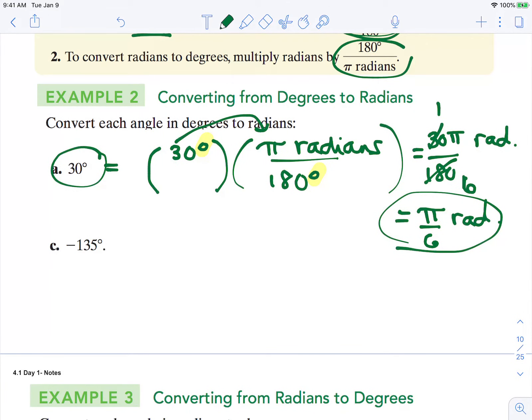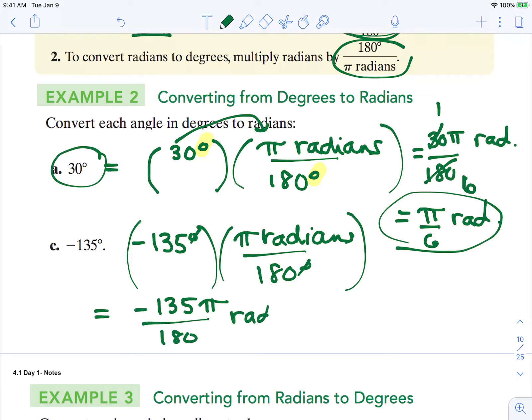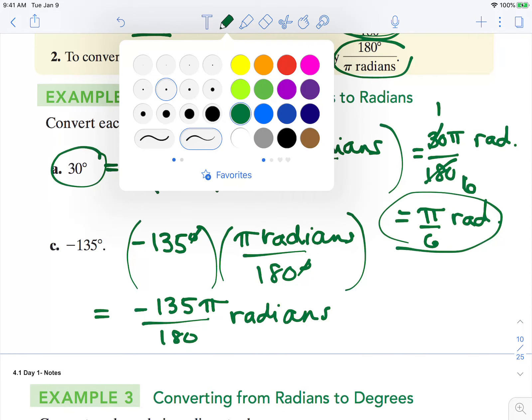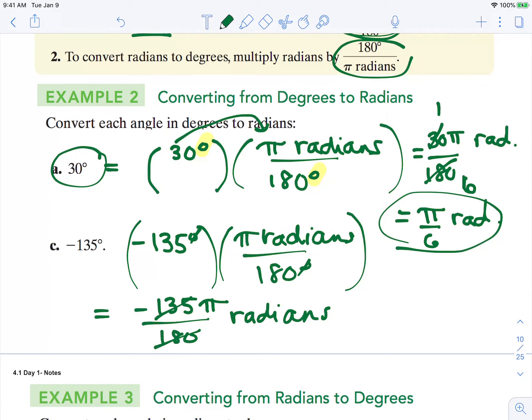Go ahead and pause and see if you can try doing this one yourself. Negative 135 degrees multiplied by π radians over 180 degrees. Now we multiply across. Negative 135π over 180 radians, and then simplify the fraction. So both of these have a common factor of 45. So we left with 3 here and 4 there. So the equivalent angle is negative 3π over 4 radians.